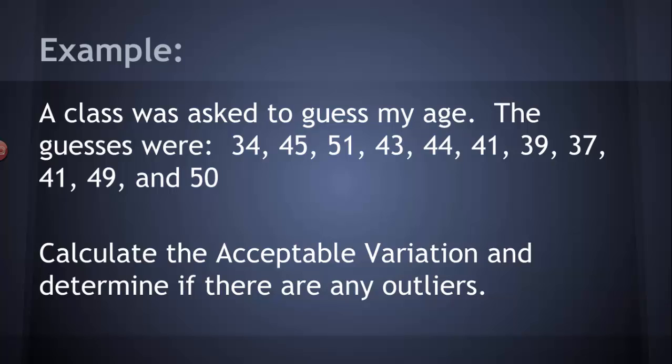So here's an example. We asked a class to guess my age. And here's the data set. Here are the guesses that were chosen: 34, 45, 51, 43, 44, 41, 39, 37, 41, 49, and 50. You'll notice that 41 shows up there twice. Two different people in this class guessed 41. That's okay. That's part of the class set. Even if there are measurements that are exactly the same among different people in the class, we still count them.